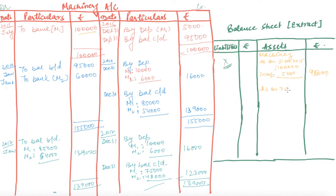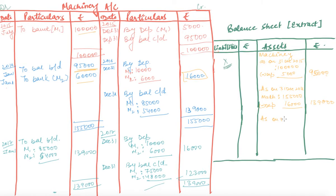As on 31st December 2016: Machinery balance = ₹95,000 plus the new machinery M2 of ₹60,000, totalling ₹1,55,000, minus total depreciation of ₹16,000, giving a net balance of ₹1,39,000 in the outer column.